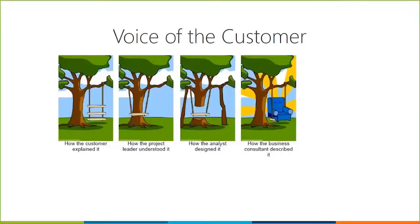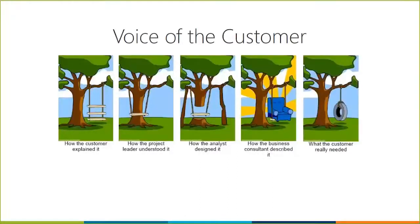But really, at the end of the day, all the customer actually needed was something of a much more simple design — could have just been a tire with a rope in a tree that still swings. Our customers often aren't able to explain what they actually need. Design thinking helps us take that step back before we start building, so we don't realize too late that we built the wrong thing. It helps us uncover and help customers create the words they need to describe what the problem actually is.